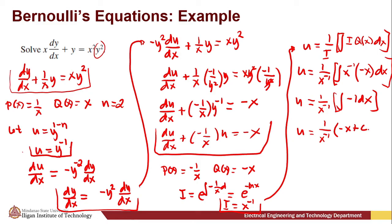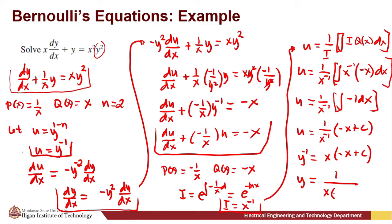Applying the formula u equals (1/i) times the integral of i times q(x) dx, and simplifying, we get the integral result plus c. Substituting back u equals y raised to negative 1, we have y raised to negative 1 equals x times (negative x) plus c. Solving for y, we get y equals 1 over (x(c minus x)). This is the solution for our Bernoulli's equation.